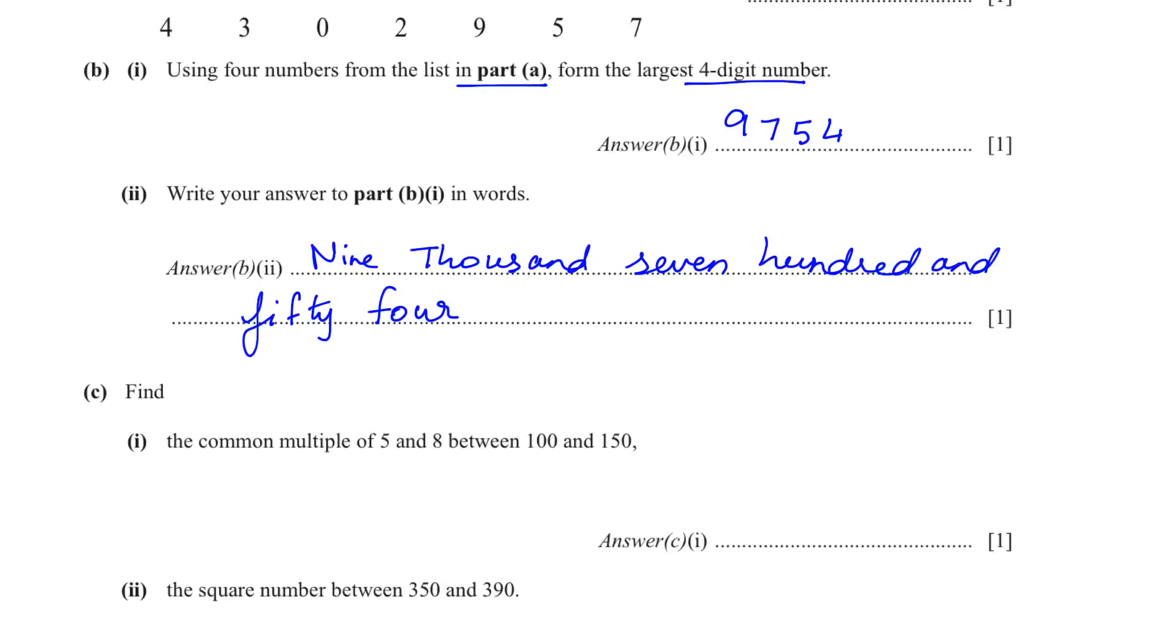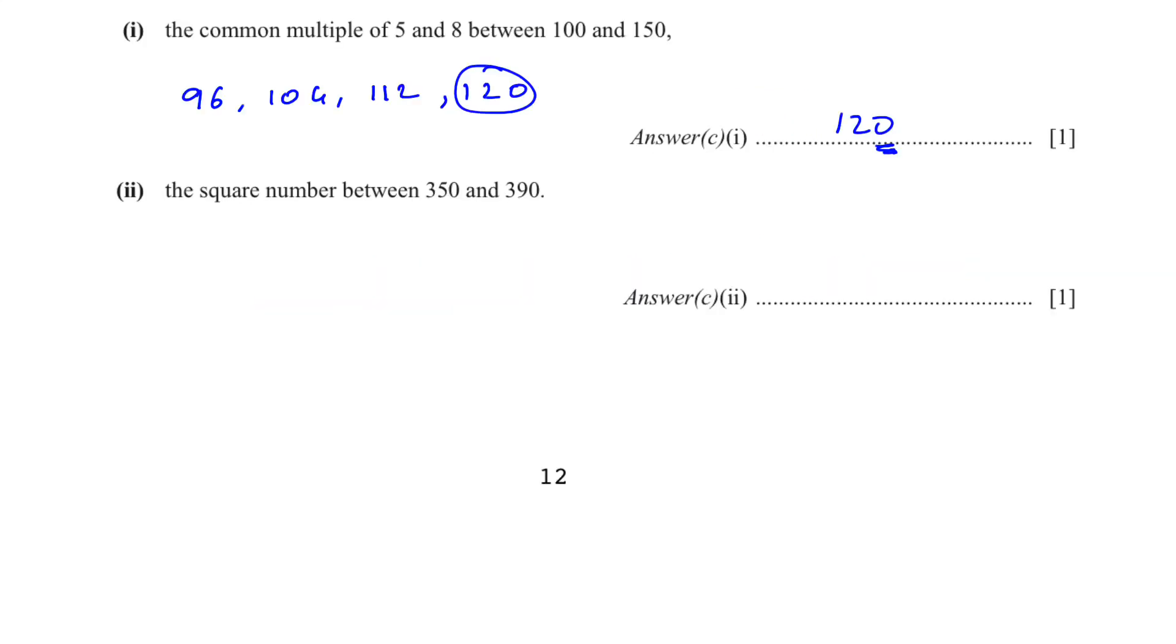In C, they are asking us, find the common multiple of 5 and 8 between 100 and 150. Let's write down the multiples of 8 first. We know that 8 times 12 is 96, 8 times 13 is 104, 8 times 14 is 112, 8 times 15 is 120. So the answer is going to be 120. If the number ends in a 0 or 5, it means it is also in the 5 times table.